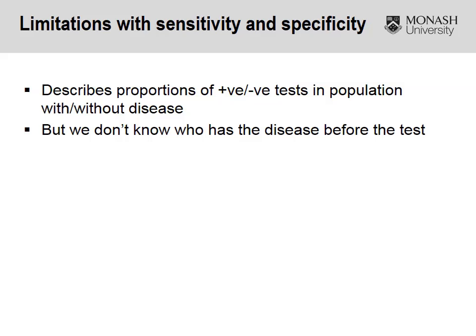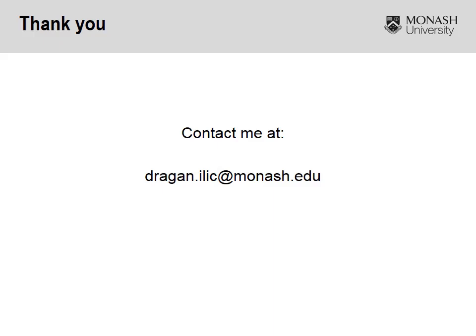That's a quick overview of sensitivity and specificity. The great thing about both measures is that they refer to the accuracy of the test itself, so sensitivity and specificity will always remain the same for a given test. What they don't tell you is the probability of someone having the disease if they test positive or negative — and that's where predictive values come into play, which we'll cover in the next video. If you have any questions, please feel free to contact me on the email address shown. Thank you.